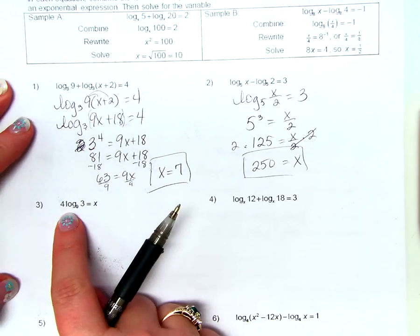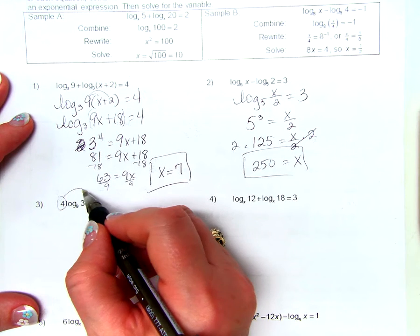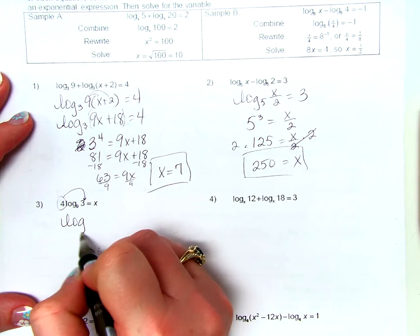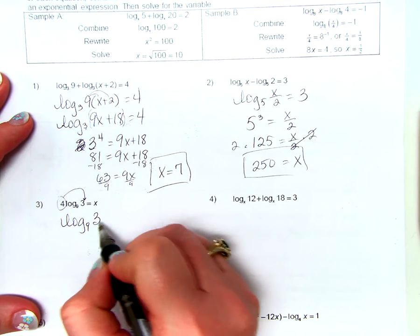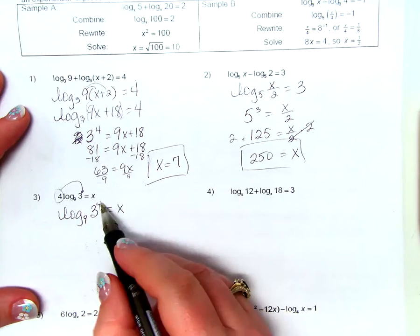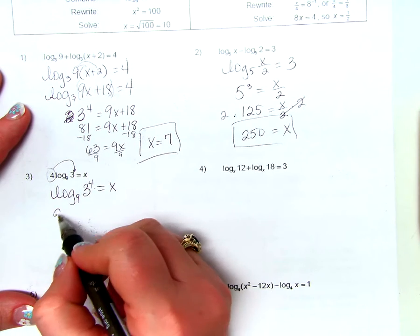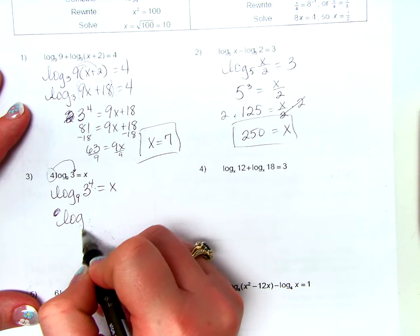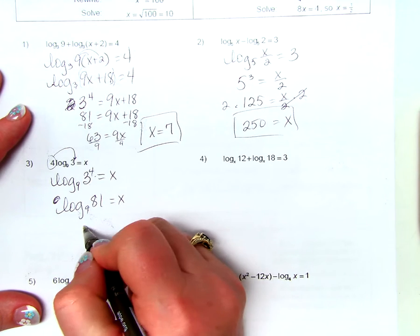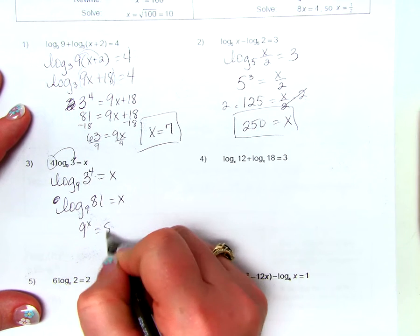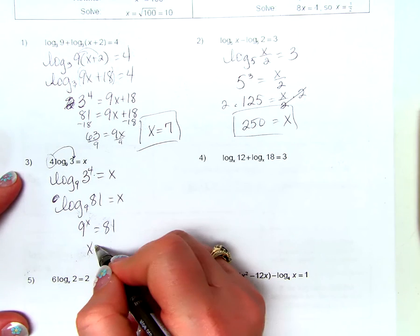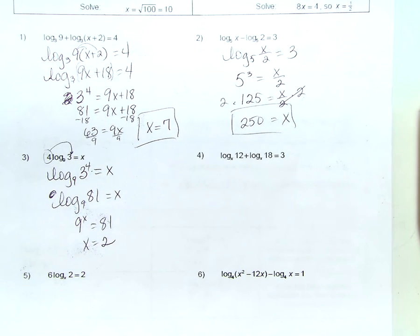Problem 3: the multiplier 4 in front becomes an exponent on 3, giving log base 9 of 3 to the 4th power equals x. Since 3 to the 4th is 81, we get log base 9 of 81 equals x. In exponential form: 9 to the x equals 81. Since 9 squared equals 81, x equals 2.